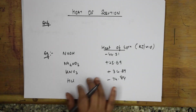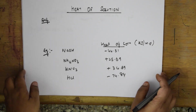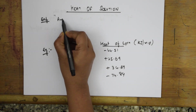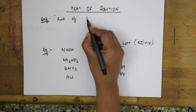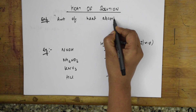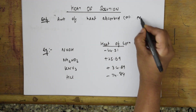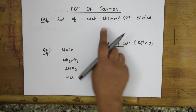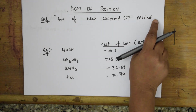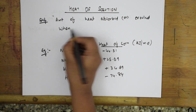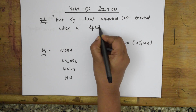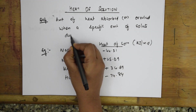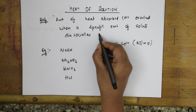Now let us come back to these examples and see. It is the amount of heat absorbed or evolved. Absorbed means an endothermic reaction; evolved means an exothermic reaction. This occurs when a specific amount of solute dissociates in a solvent.